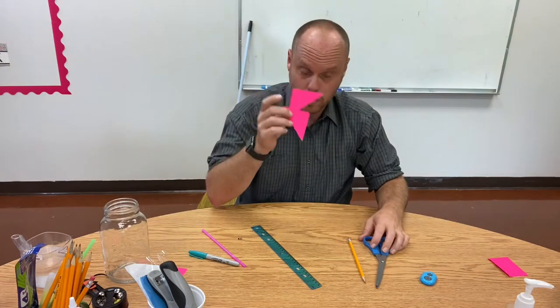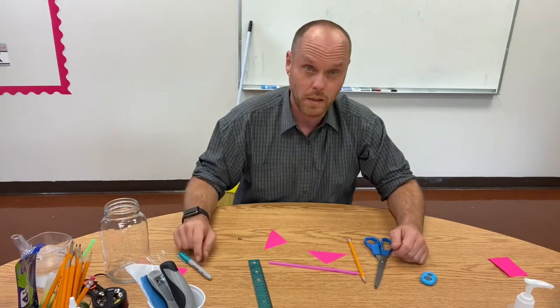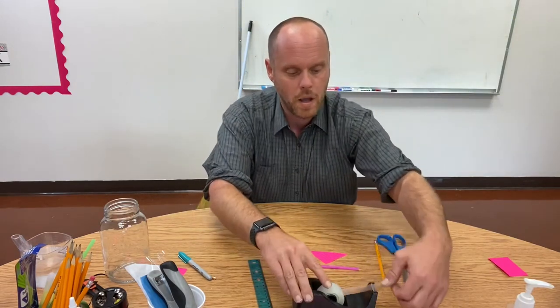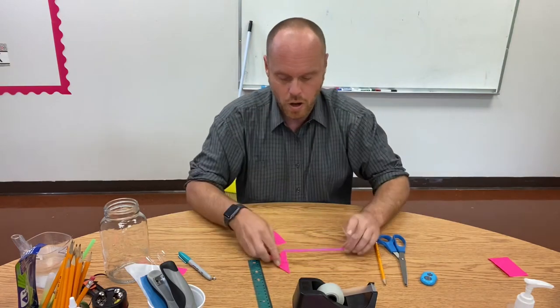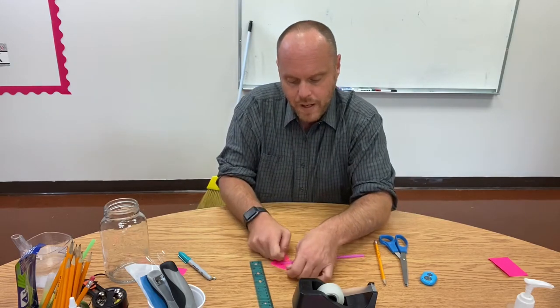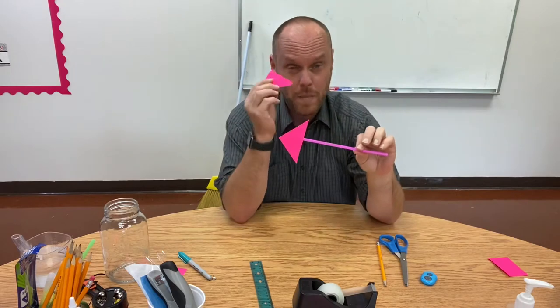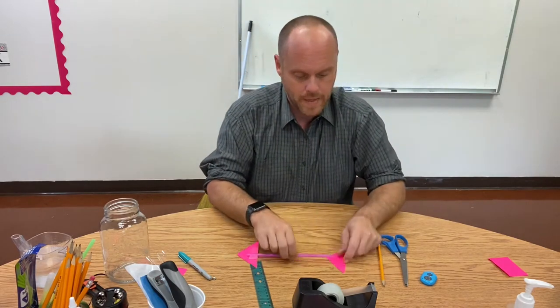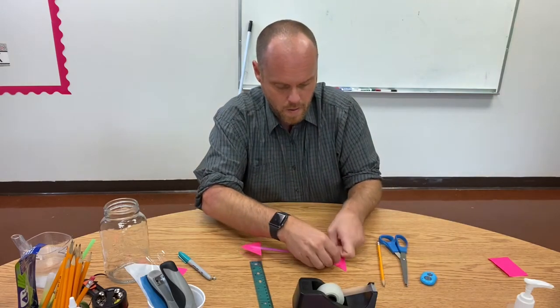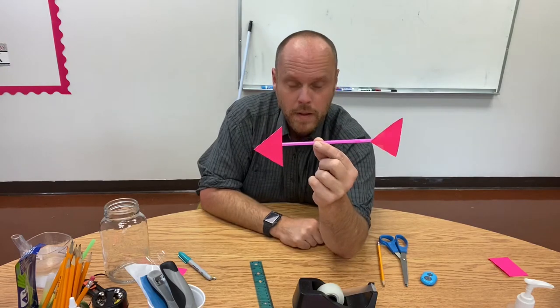So we take our triangles and we take our straw. I forgot one of the other bits of the experiment, and that is a little bit of tape. You're going to want to tape your triangles to your straw. You're going to put the straw in the center of the triangle and you're going to want both triangles pointing in the same direction. And there you go, we have created an arrow.